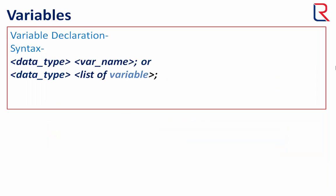So now time for variable declaration. There are two syntax to declare the variable. The first is: data_type variable_name; or the second is: data_type list of variables;